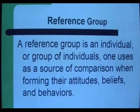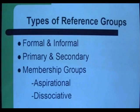There are several types of Reference Groups: Formal and Informal, which consists of having a clear specified structure; primary and secondary, which consists of face-to-face or second-hand interaction; and there are also membership reference groups, which can be classified as either aspirational — one that an individual desires to be affiliated with — and dissociative, one that an individual does not desire to be associated with.